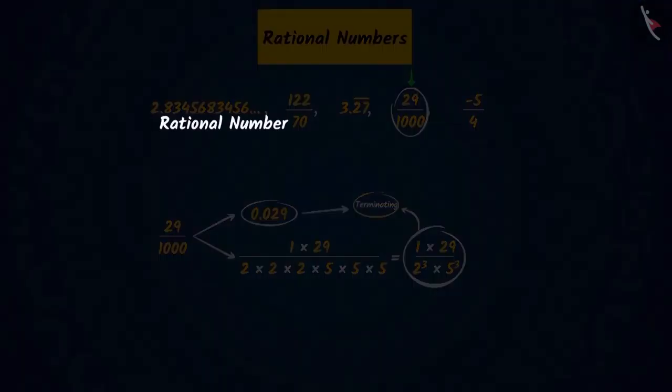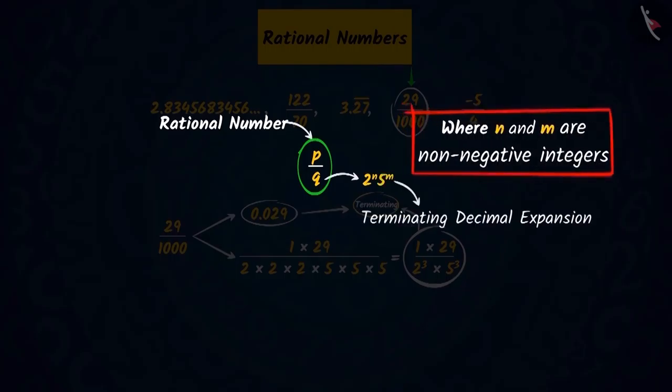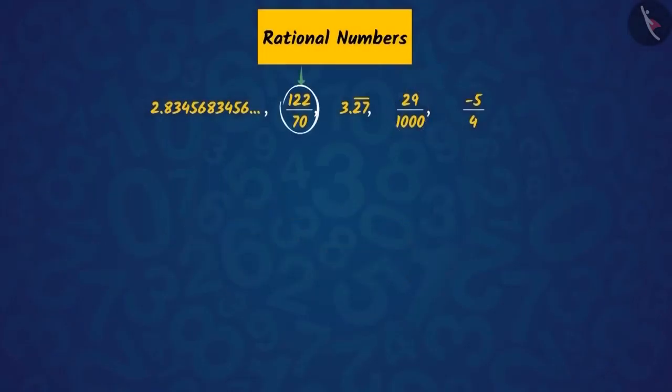Because we learn that in a rational number, p upon q, if q is in the form of 2 raised to n into 5 raised to m, the decimal expansion of such a rational number will be terminating. And, if q is not in the form of 2 raised to n into 5 raised to m, the decimal expansion of such a rational number will be non-terminating, repeating, as you can see in this number.